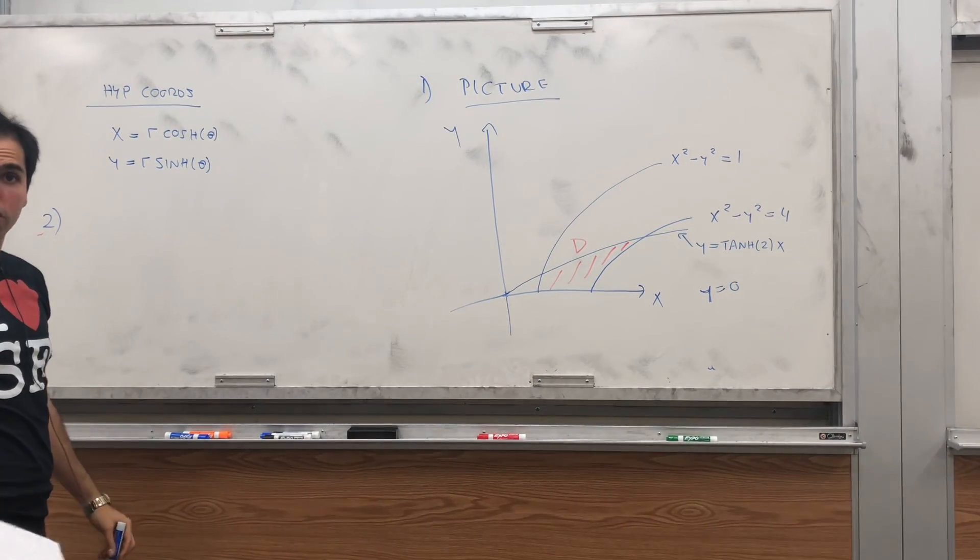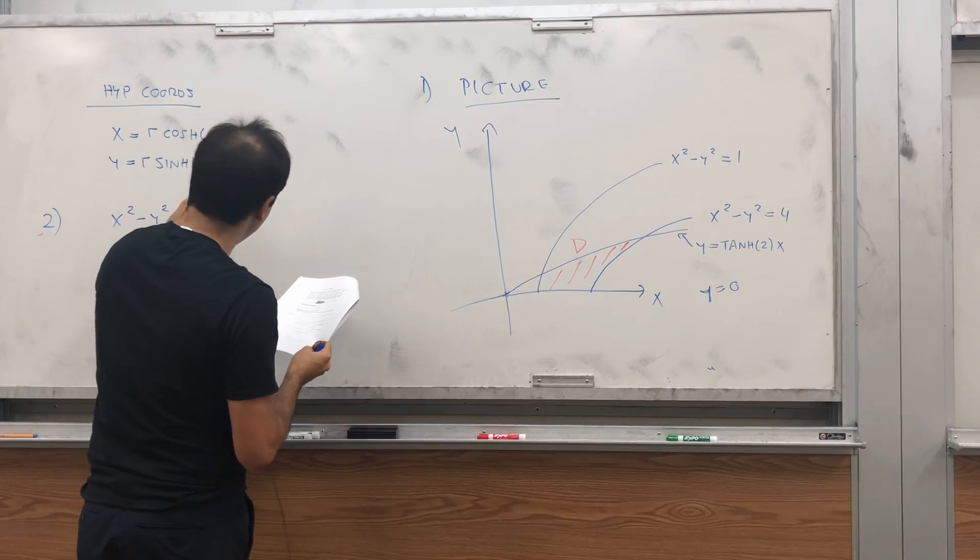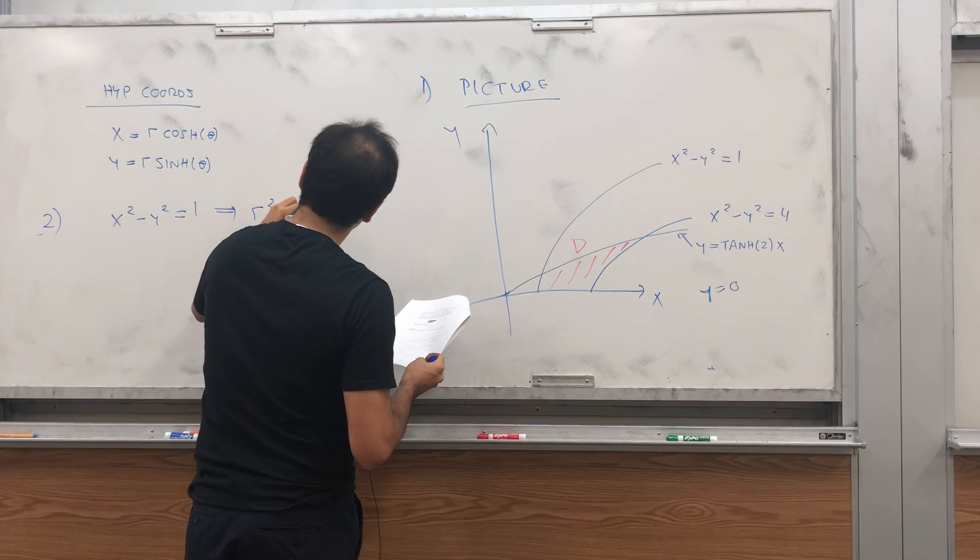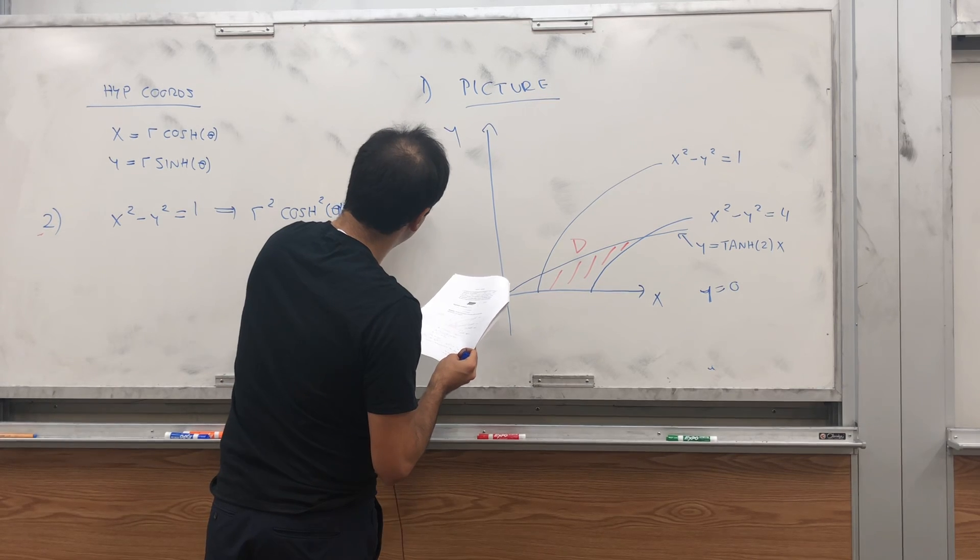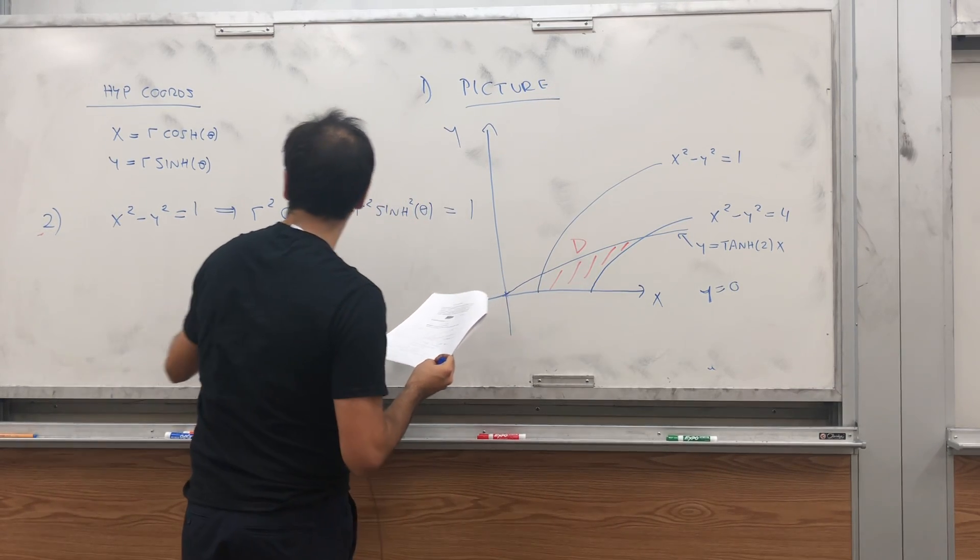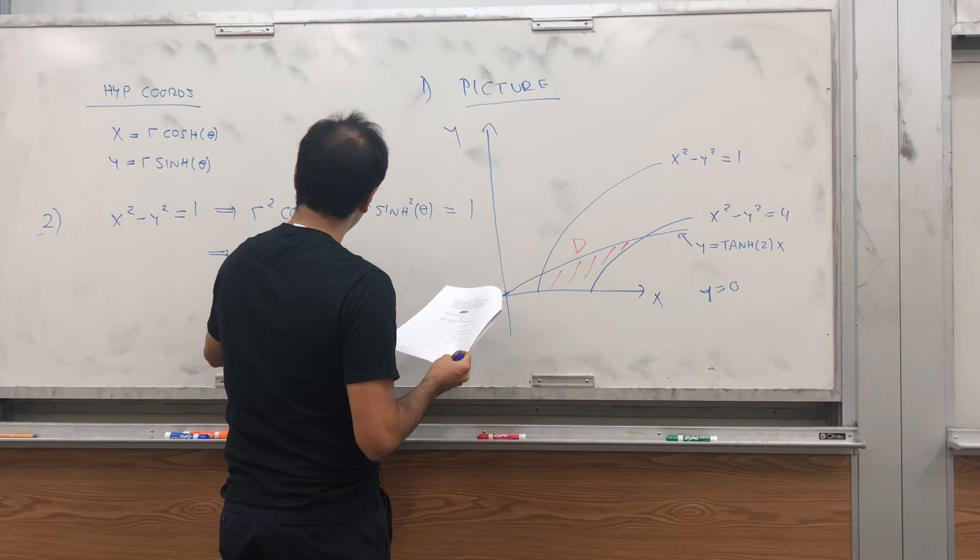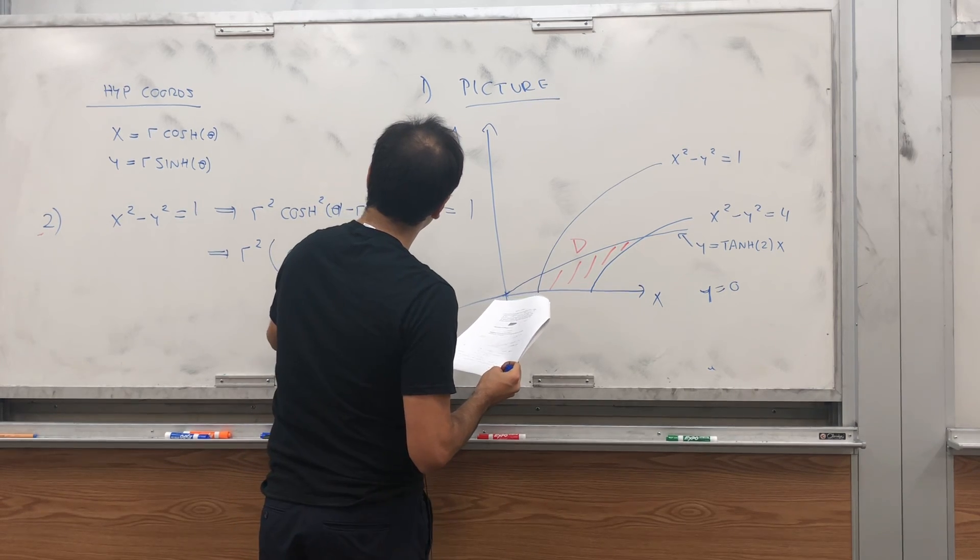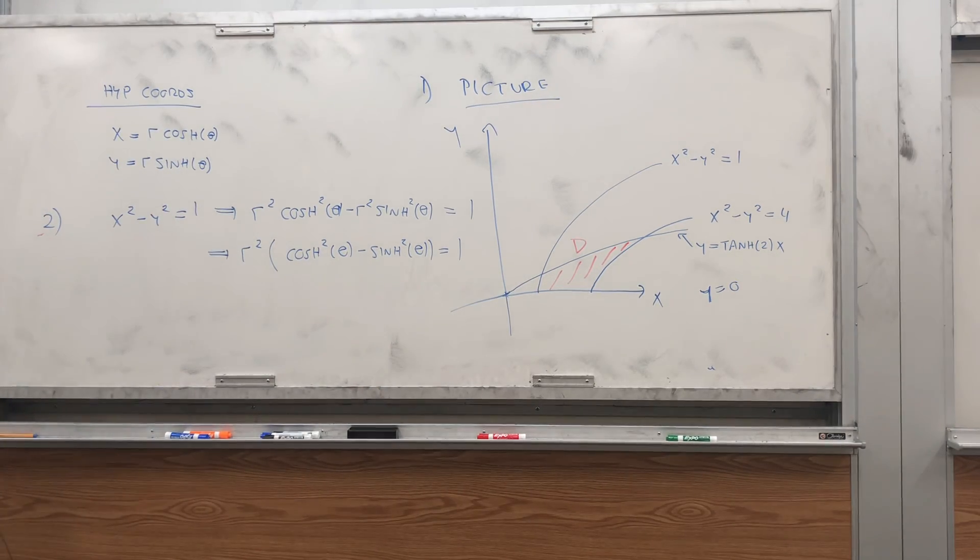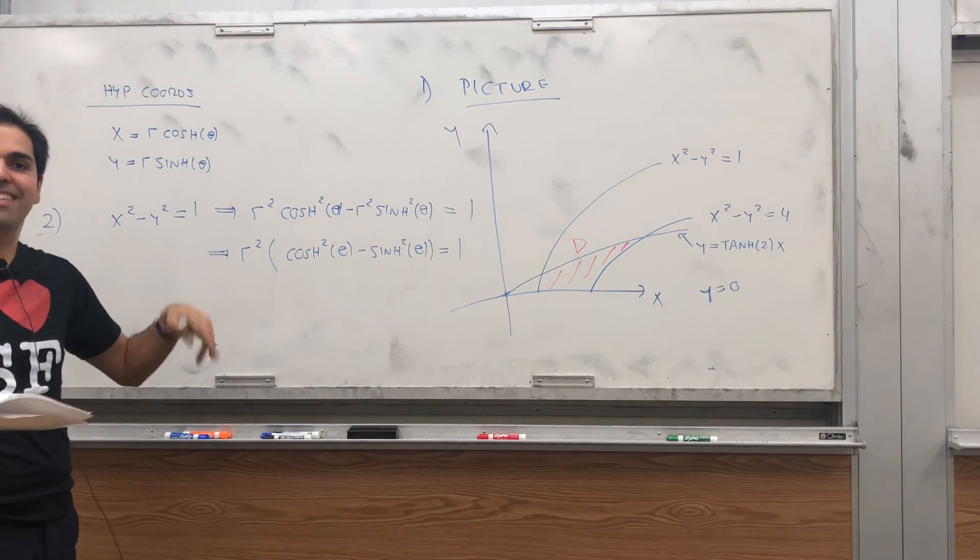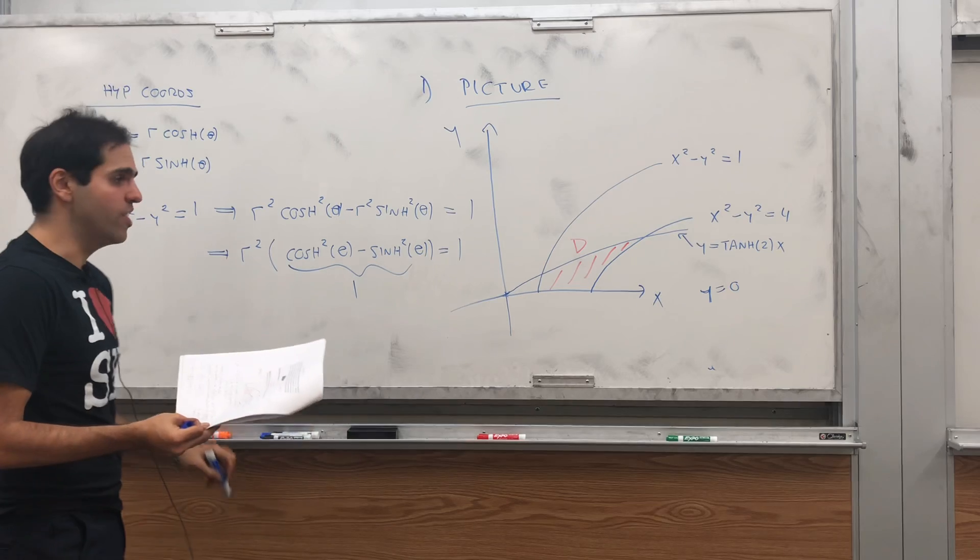And now, let's express our curves in terms of r and theta. So, x squared minus y squared equals to 1. That means r squared cosh squared theta minus r squared sinh of theta equals to 1. So, r squared cosh squared theta minus sinh squared theta equals to 1. And here's the nice thing.